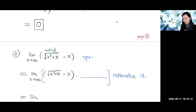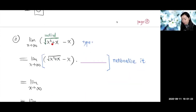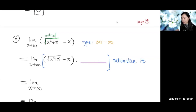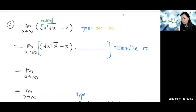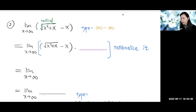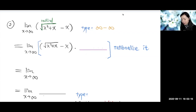This second example is also the type infinity minus infinity, so it is an indeterminate form. To convert it to one of the two emergency types — zero over zero or infinity over infinity — notice that there is a radical here, so we can rationalize by multiplying by the conjugate.